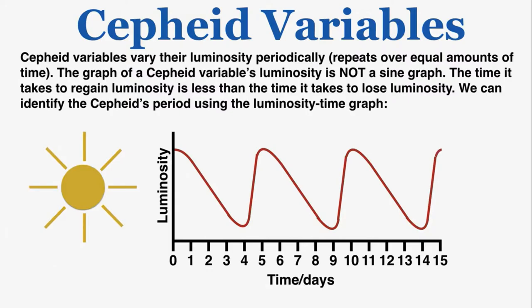Looking at the graph, the period — the time it takes the Cepheid to complete one full cycle of becoming brighter and dimmer — is five days. The period of a Cepheid variable can be found on a luminosity-time graph by looking at the time between two points of equal luminosity.